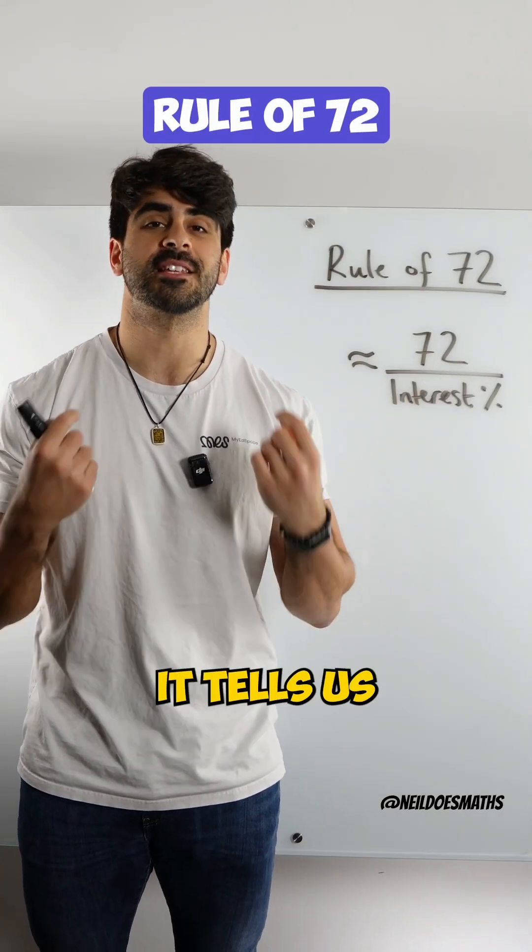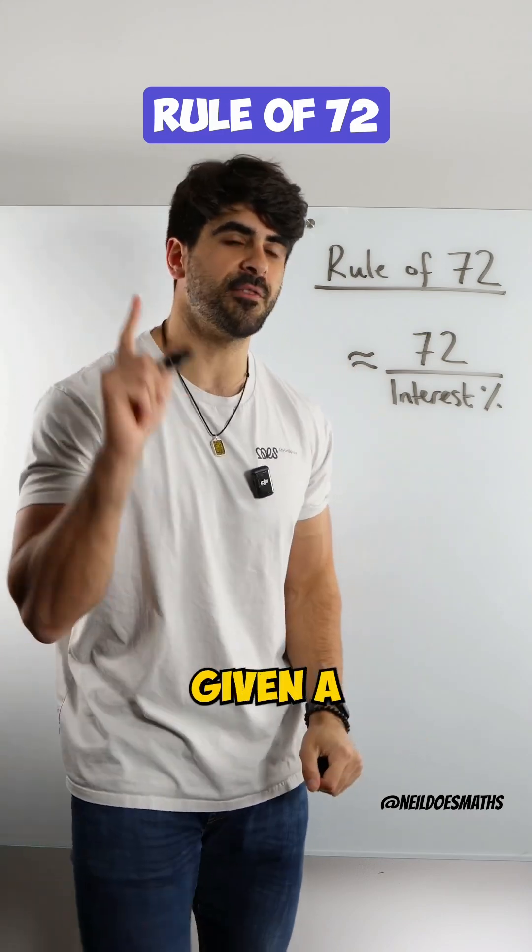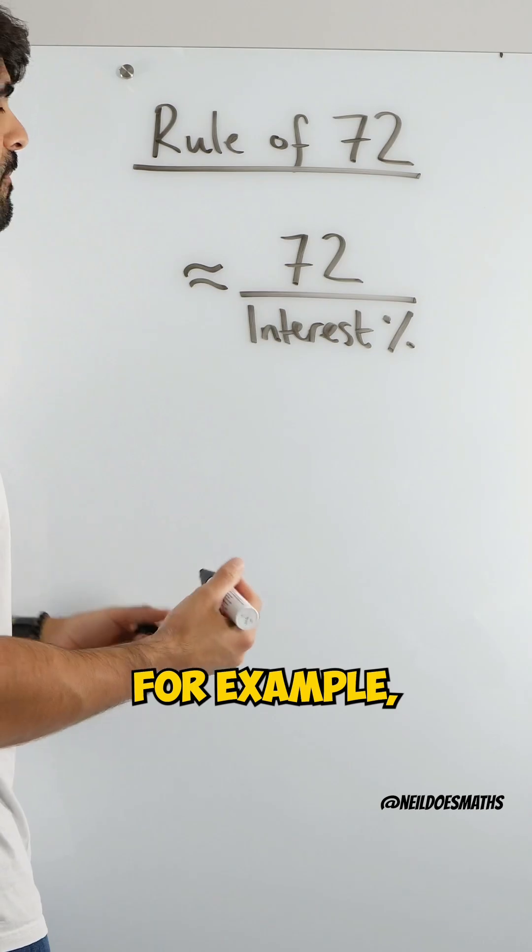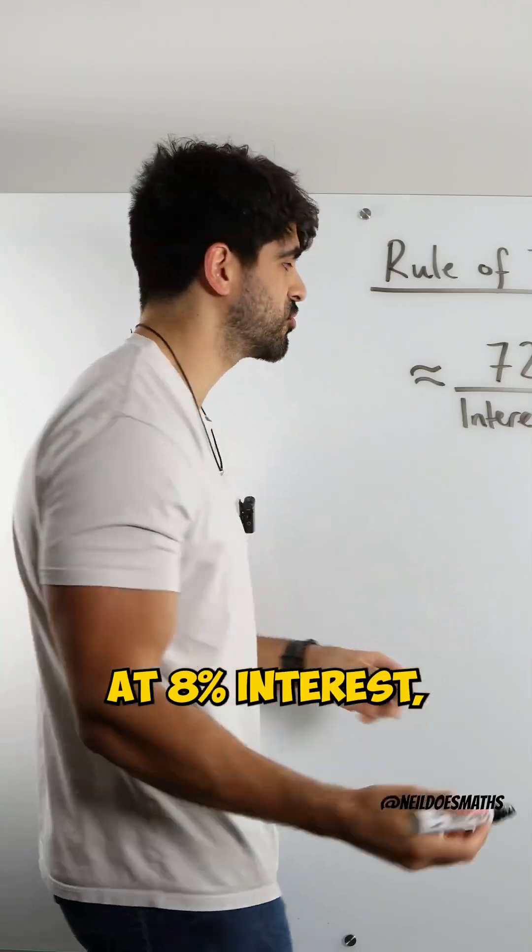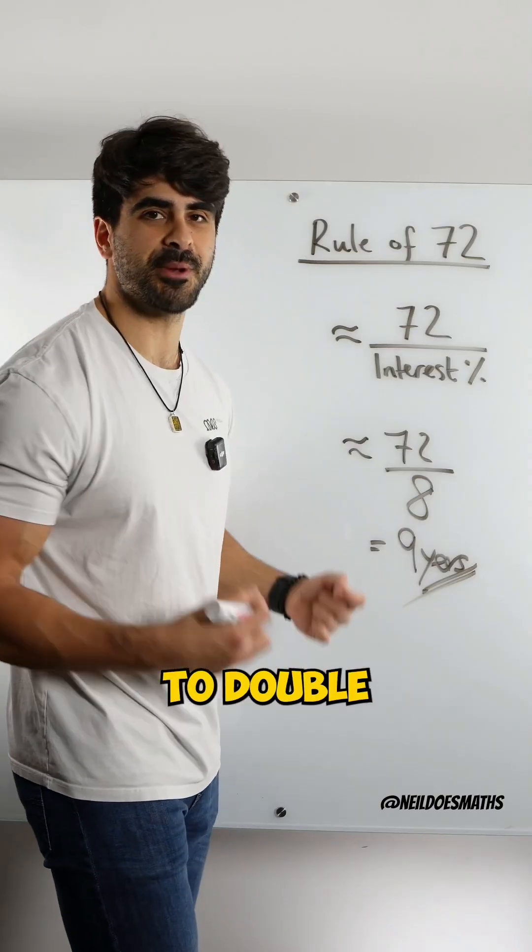Have you heard of the rule of 72? It tells us the length of time it would take to double our money given a particular interest rate. For example, if we invest our money at 8% interest, that's approximately nine years to double our money.